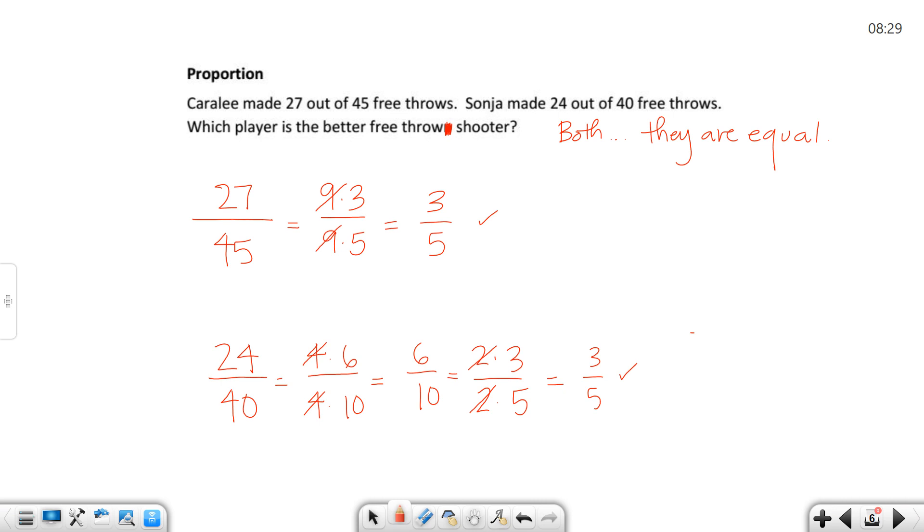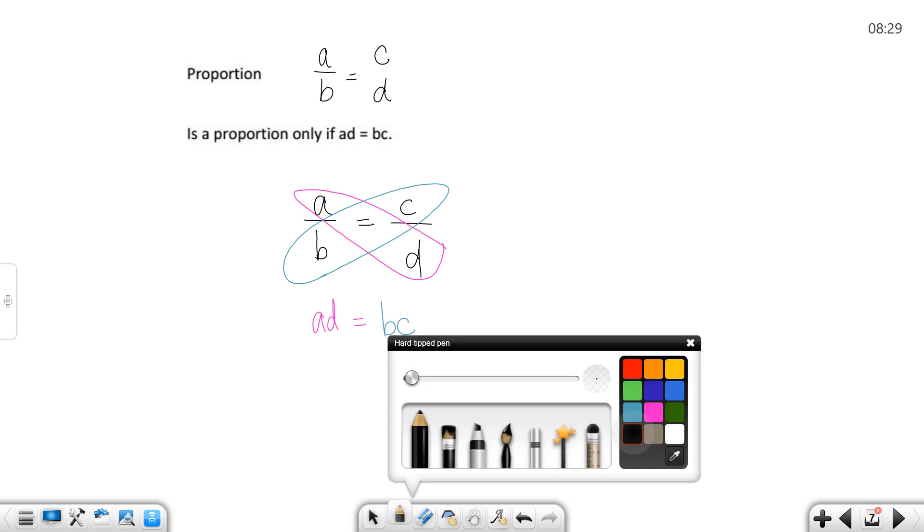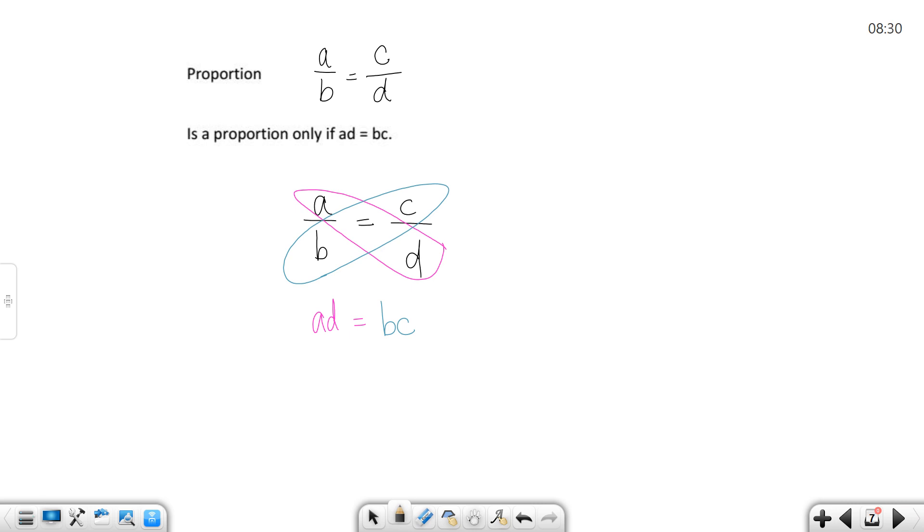And so that brings us to our topic of proportion. If you have two equal ratios, that means they're proportionate. So two ratios A over B and C over D are equal if their diagonals are equal. If you say A times D going the diagonal this way, and B times C going the diagonal that way, if they're both equal, then you know that you have a proportion.